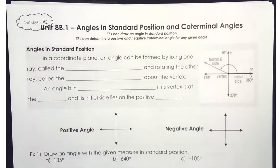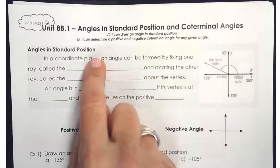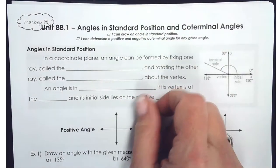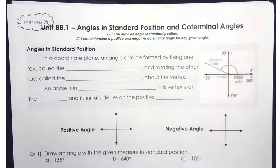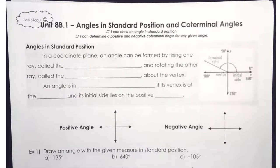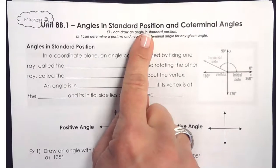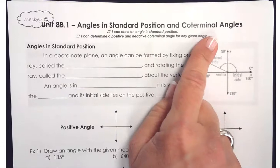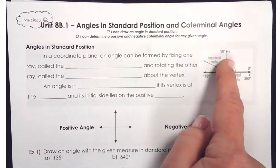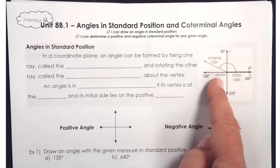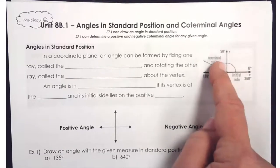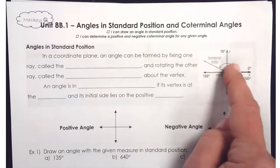Today we're looking at what we're going to call unit circle trigonometry or circular trigonometry. What we're going to do is look at angles in standard position and coterminal angles. When we get into circular trig, we're going to be looking for angles and thinking about them in the form of a circle.